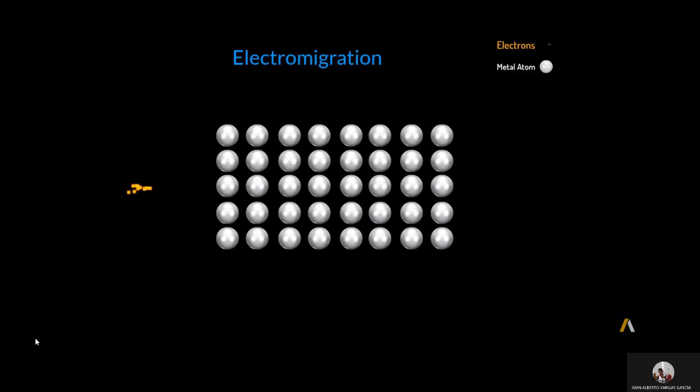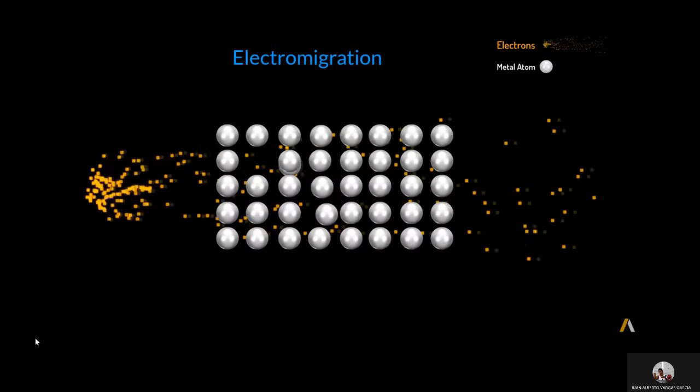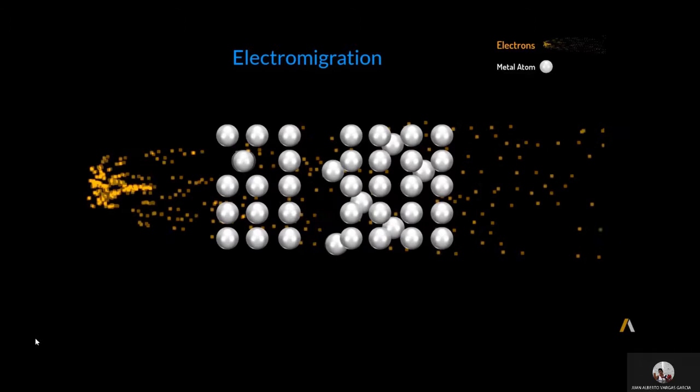High currents flowing through an interconnect produce an electron wind that can dislodge atoms and transport them away. This causes voids to form in the metal, increasing their resistance and leading to potential open circuits.